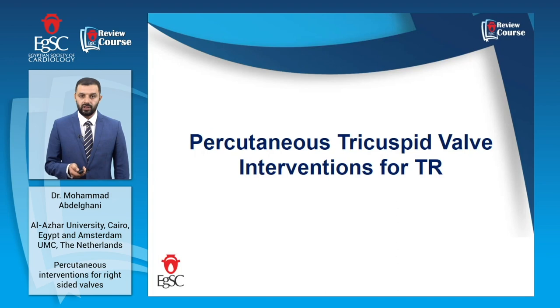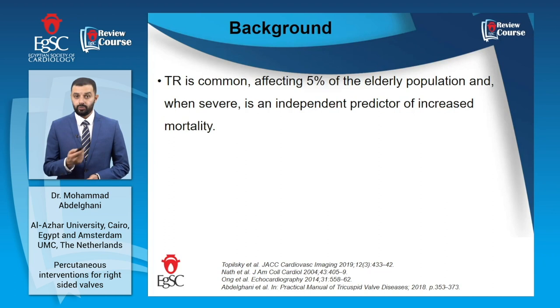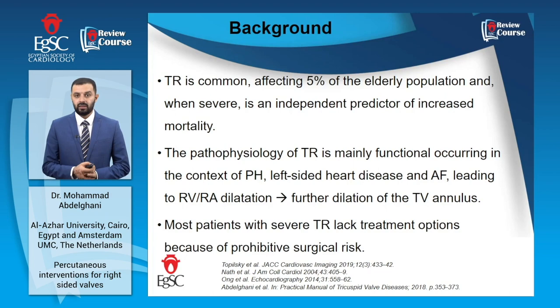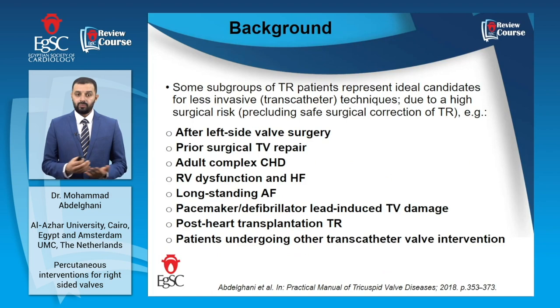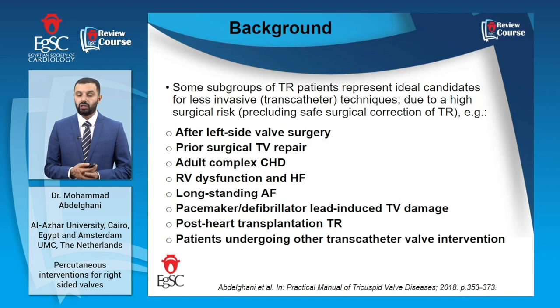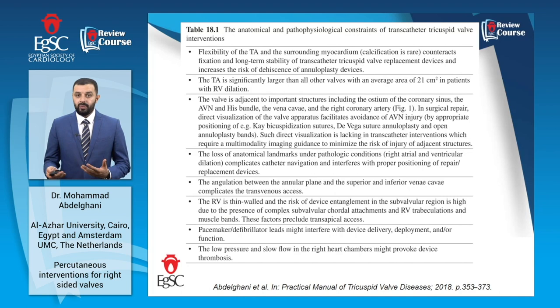Looking at percutaneous tricuspid valve interventions for tricuspid regurgitation: TR is a common disease. Severe TR can affect up to 5% of the elderly population and portends increased mortality. The pathophysiology is basically functional in the setting of left-sided heart disease, and many of those patients are not good candidates for surgery. Some subgroups represent ideal candidates for less invasive techniques due to very high surgical risk, including patients who have undergone left-sided valve surgery, prior surgical tricuspid valve repair, or those with adult complex congenital heart disease or advanced heart failure. While transcatheter therapy would be ideal for those patients, it faces a long list of challenges.